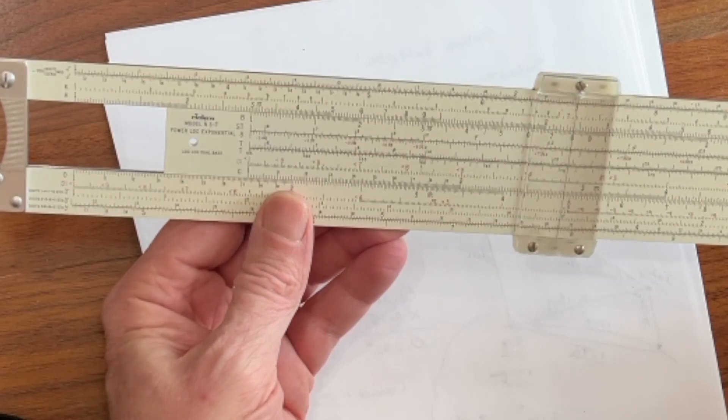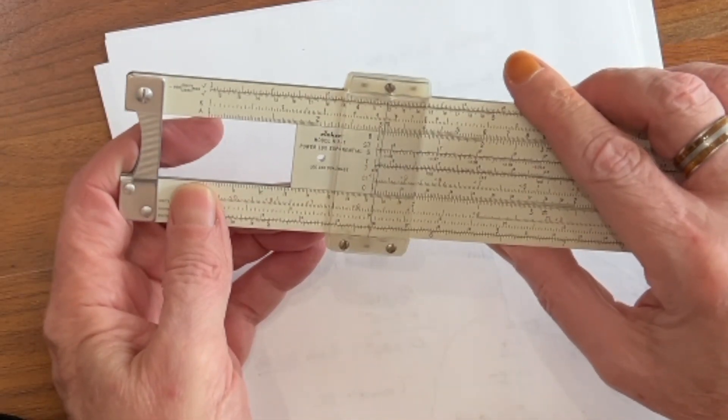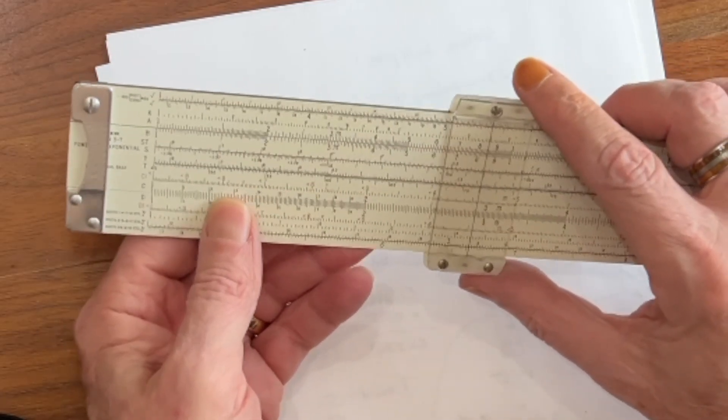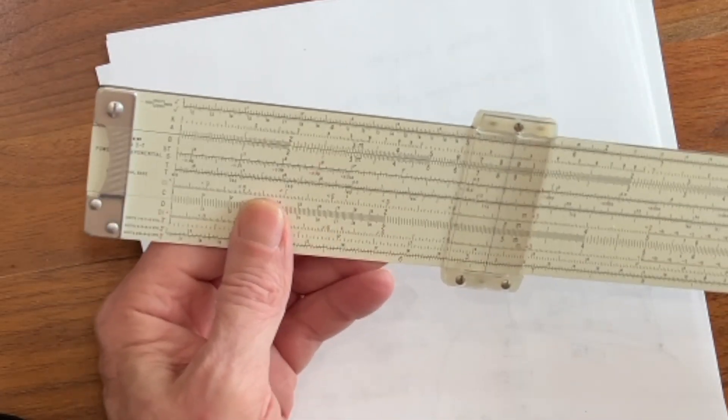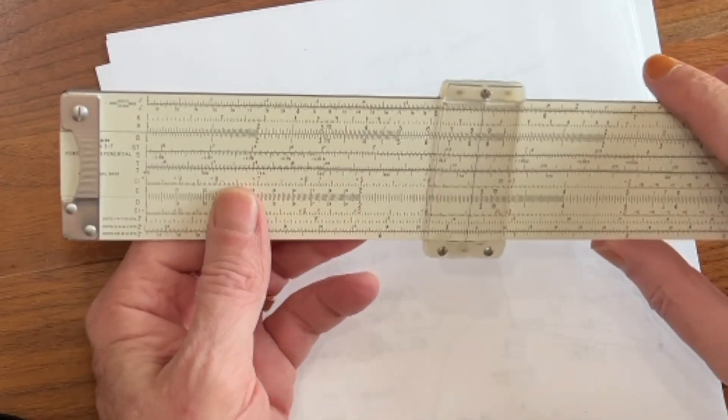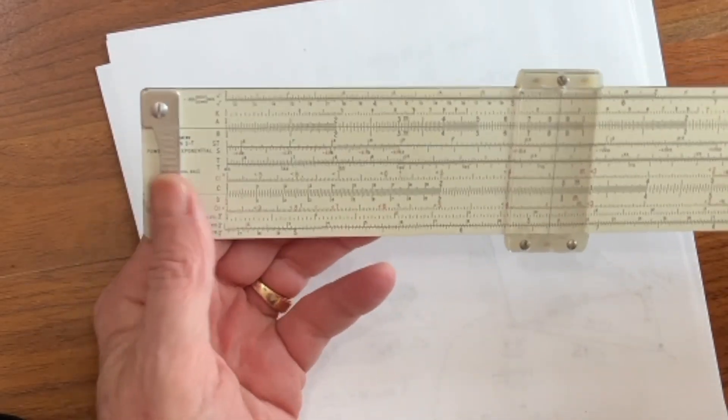So we want to make sure that we're dividing by the right number. So we bring the 8 right underneath, come out to the index, and read our answer. It's 3. So sometimes it's kind of useful to do your standard division and multiplication on the A-B scale, simply because it helps you with the decimal place a little bit. But let's go ahead and have a look at what they're actually for.